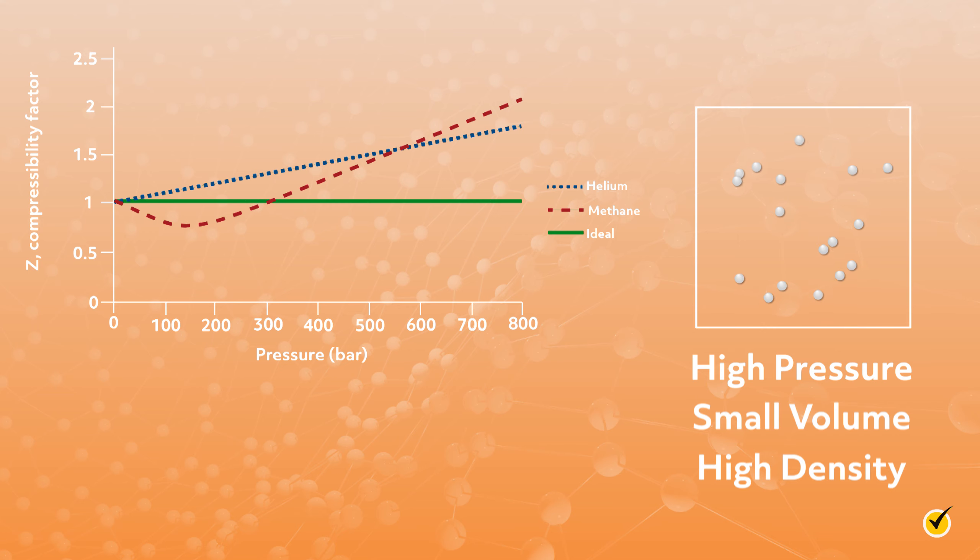So the volume of a real gas at high pressure is actually volume of the gas plus volume of the container, which of course is greater than the volume of the container that's used for ideal gas. This results in a Z value greater than one, or positive deviations from the ideal gas law. As you can see from the graph, this gets more and more pronounced as the pressure continues to increase.